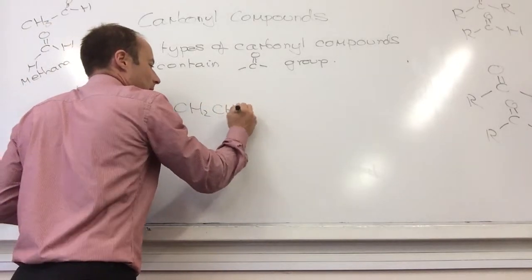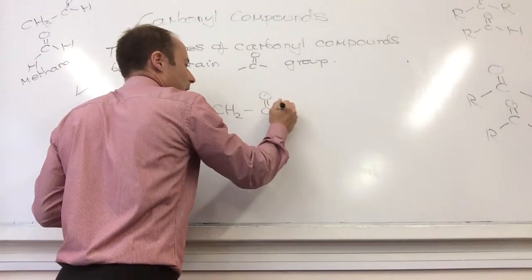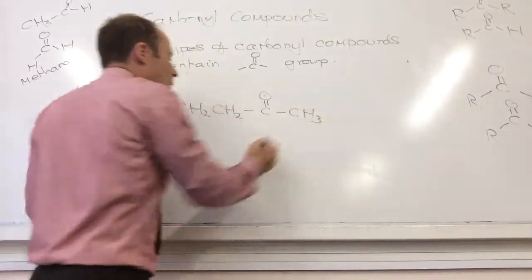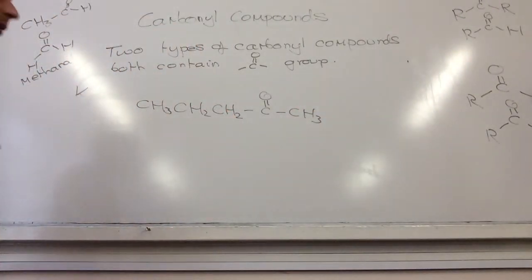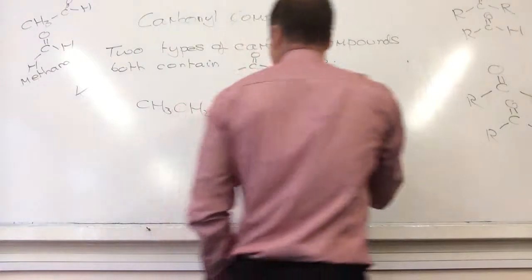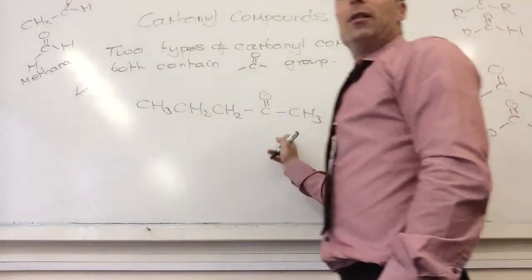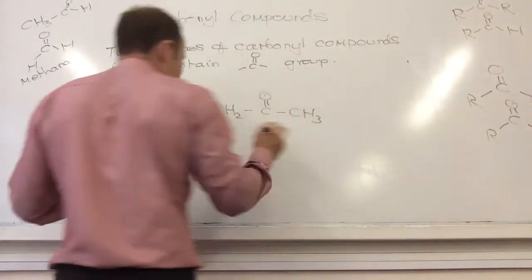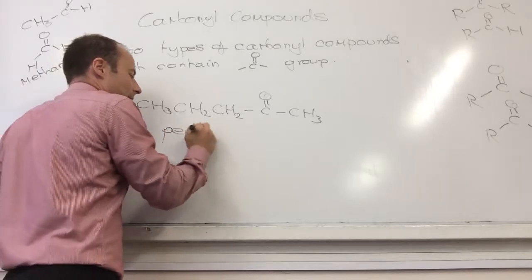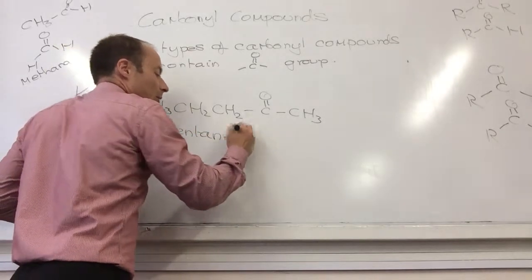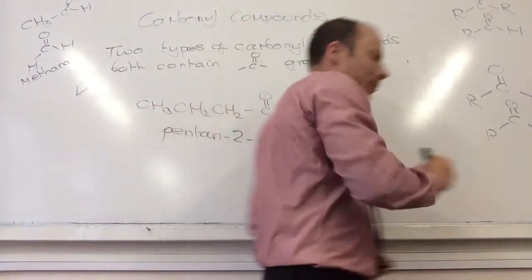CH3-CH2-CH2-C double bond O-CH3. What would this be called? Pentanone. One, two, three, four, five. Pentan-2-one. Yeah.